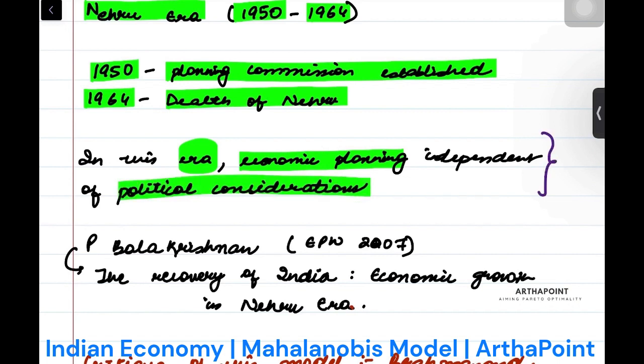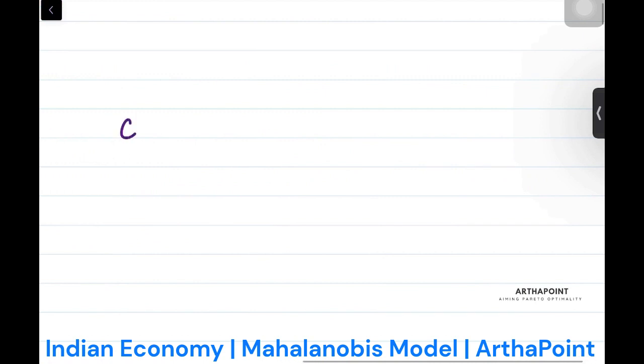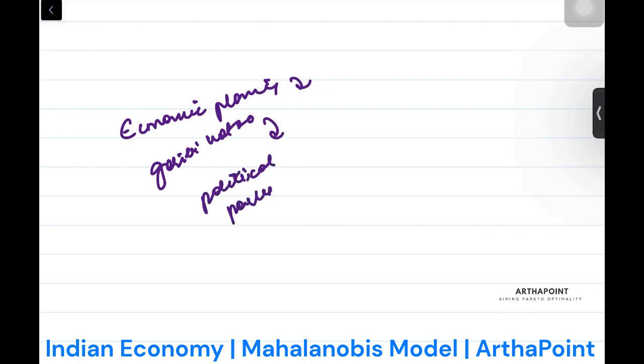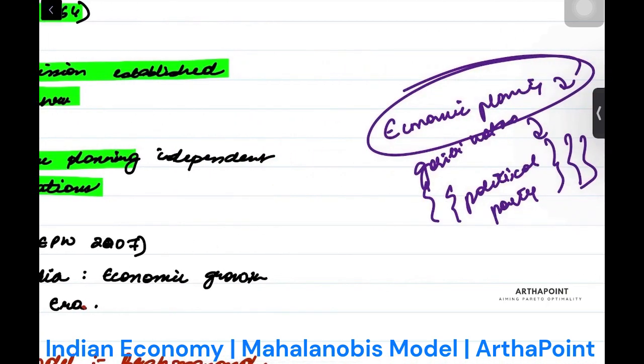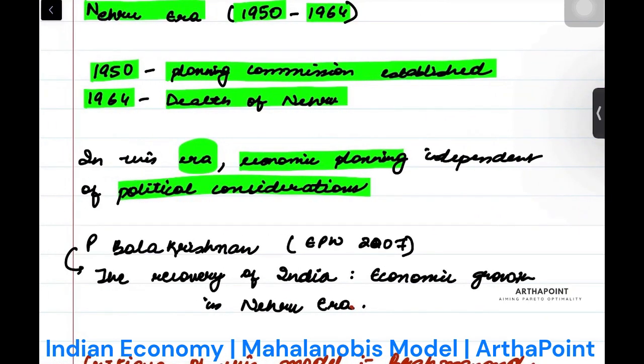Usually what happens is whenever any economic plan comes, it will be launched such that some political party will be benefited from it. But that didn't happen in this era. During this period, it was independent of political consideration. Politics ke hisaap se economic planning nahi ki gai thi.